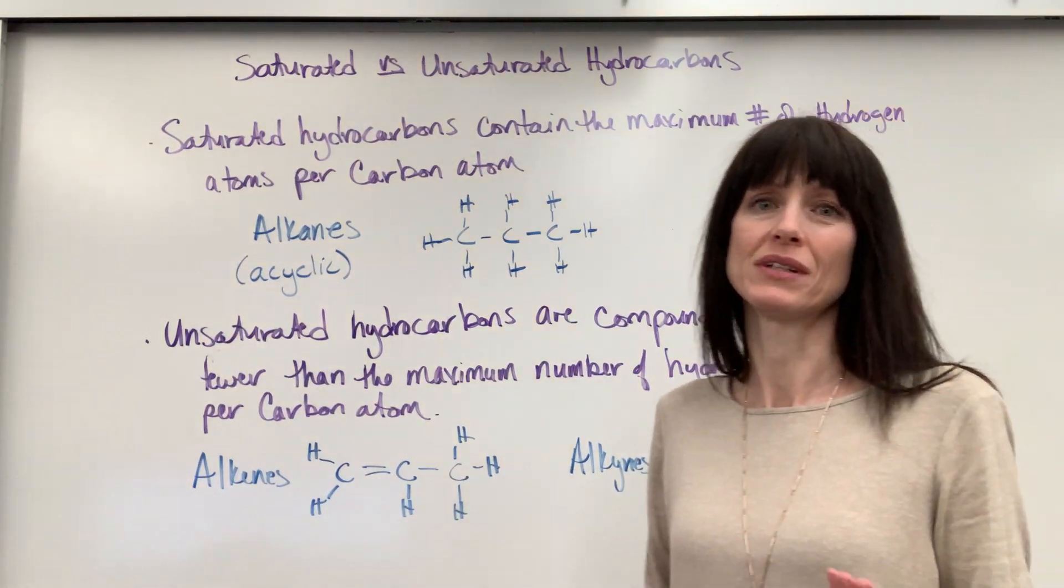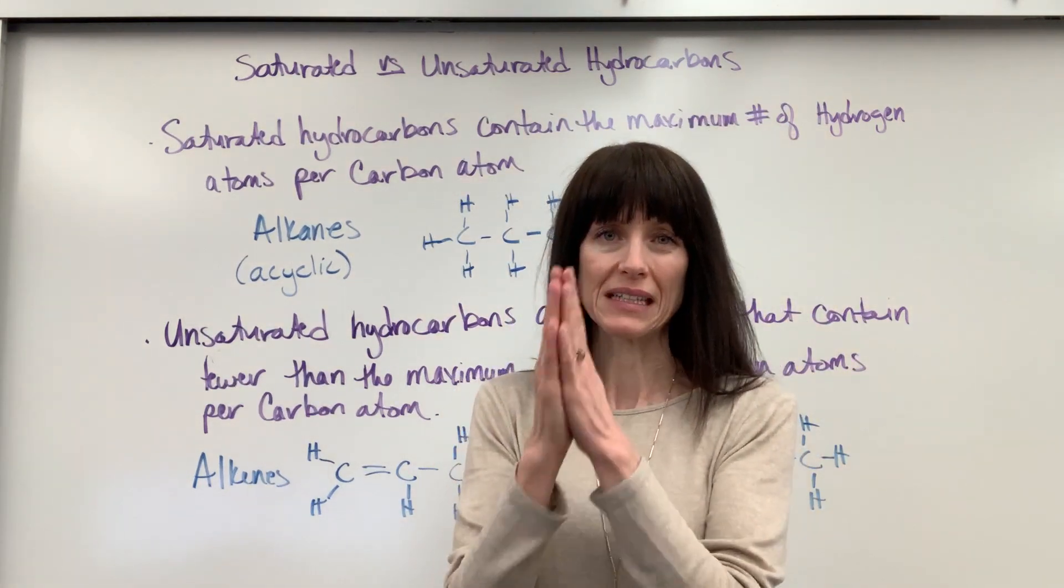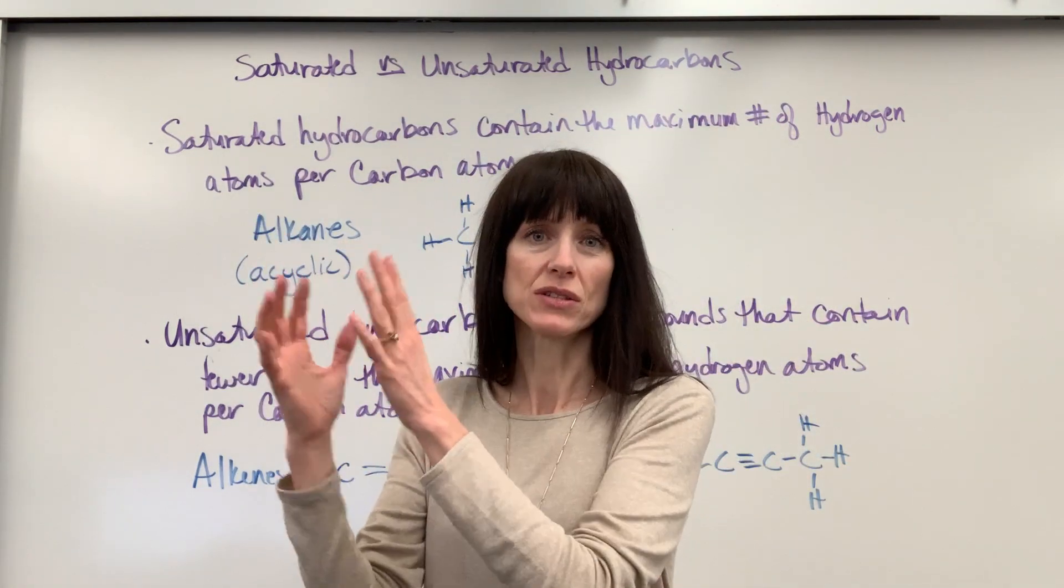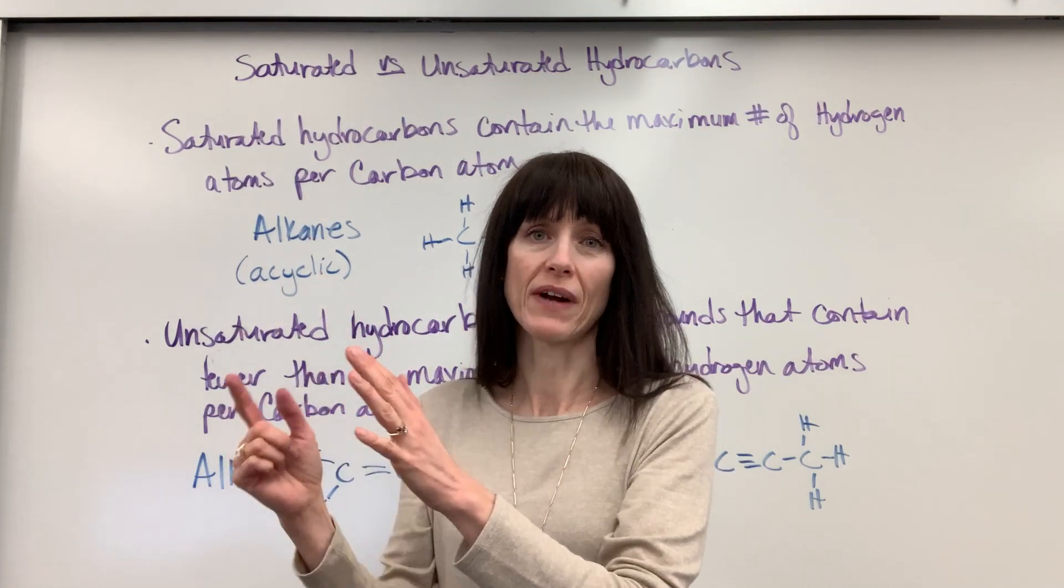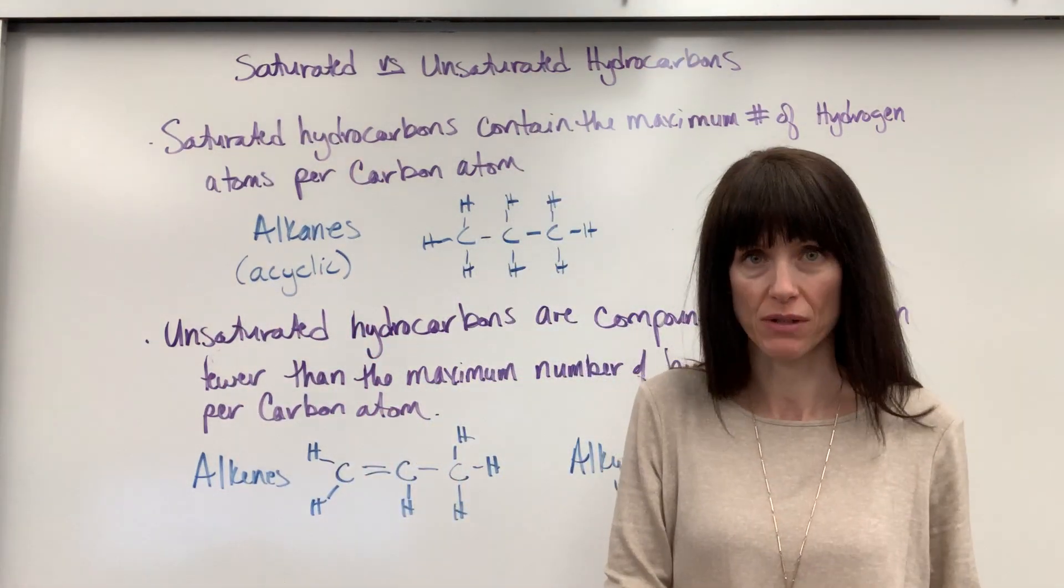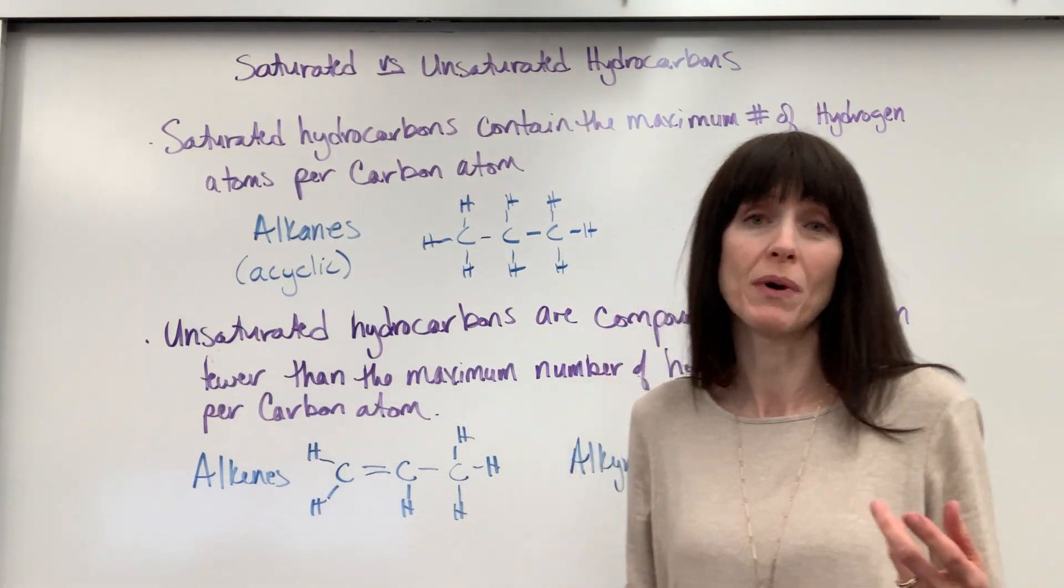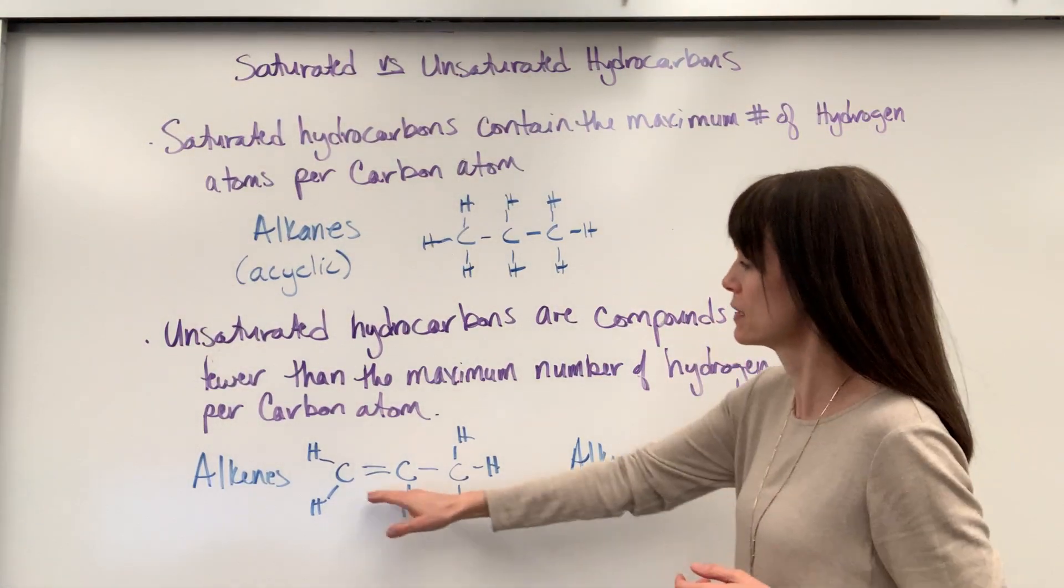Really, this is going to be your alkenes and alkynes. So you can make a line in your brain, a delineation in your brain. Alkanes are saturated. They have the maximum number of hydrogens around carbon. Alkenes and alkynes are unsaturated. They don't have the maximum number of hydrogens around every carbon because of those multiple bonds. And you can see that here.